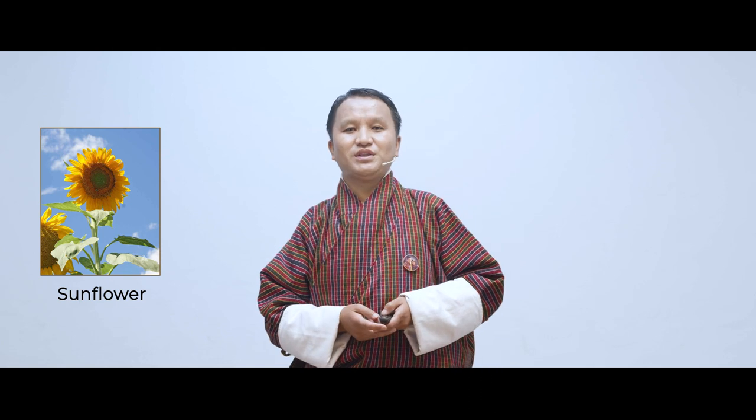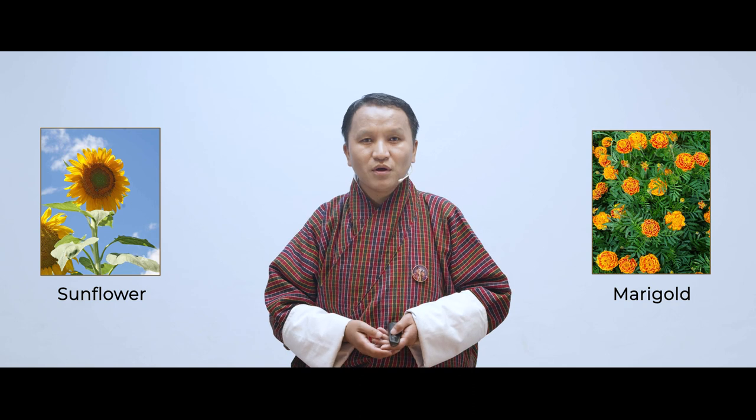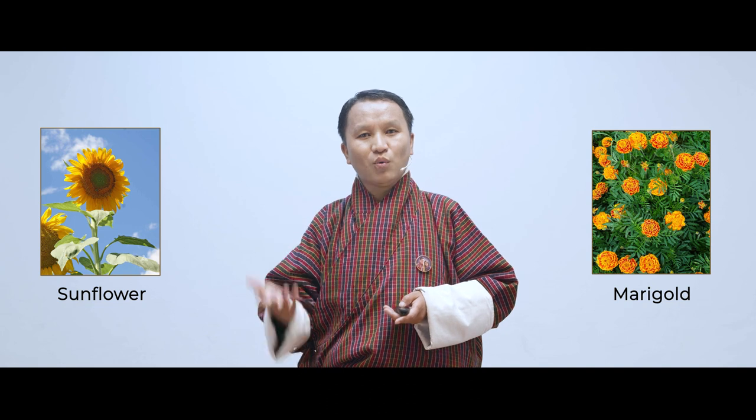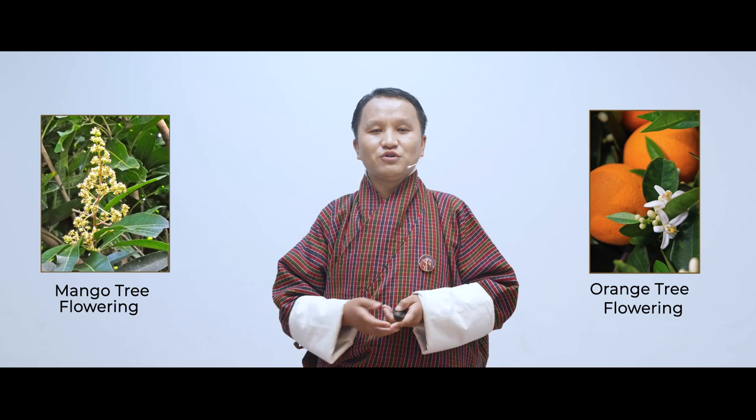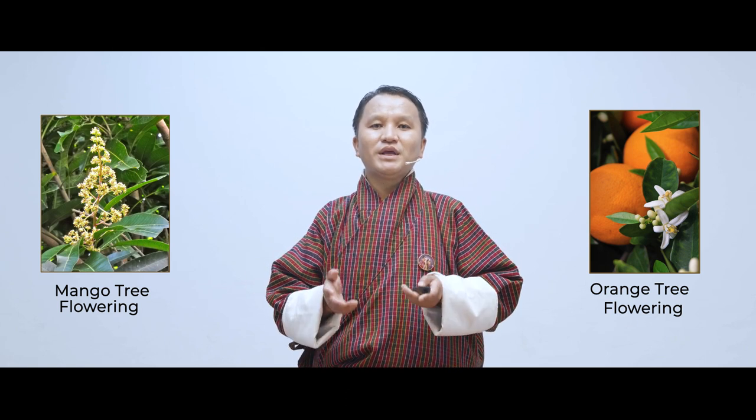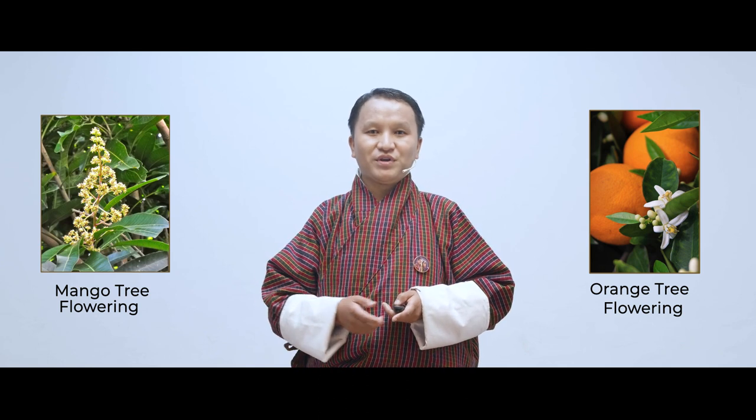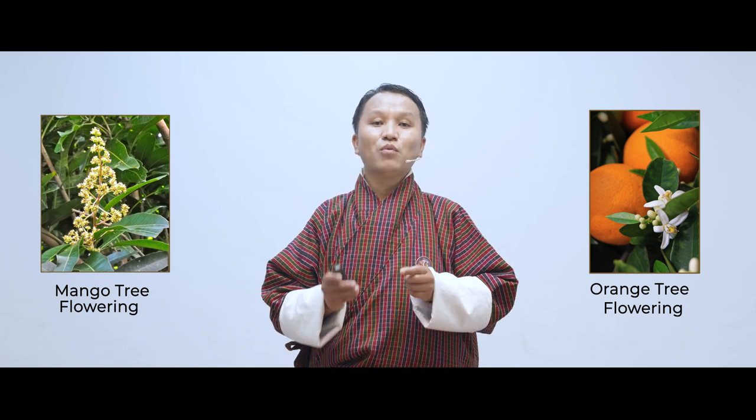Can you think of an example of a monocarpic plant — one which flowers only once in its lifetime? Examples include sunflower, marigold, and carrot — all of these flower once and then die, though the seed remains. For polycarpic plants, examples include apple, orange, mango, and rhododendron, which flower every year at the same time. Such plants we call polycarpic plants.